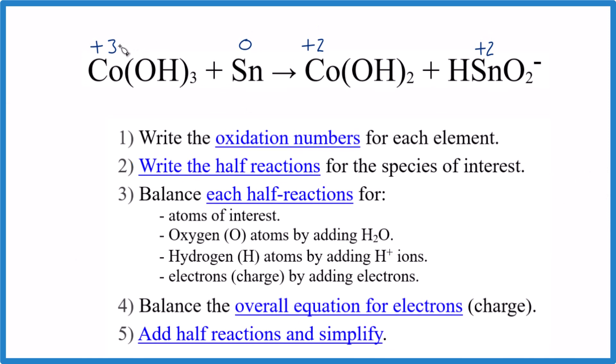Now we write the half reactions. The cobalt goes from +3 to +2, and the tin goes from 0 to +2. Plus 3 decreases to plus 2, so it's going to be reduced—that's our reduction half reaction. Zero to plus 2 increases, so that is the oxidation half reaction.